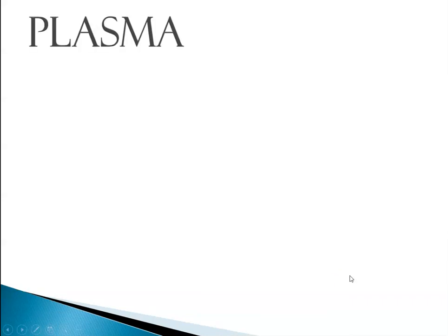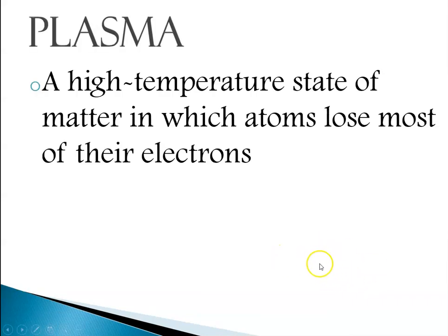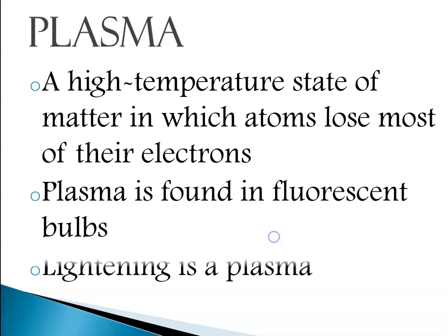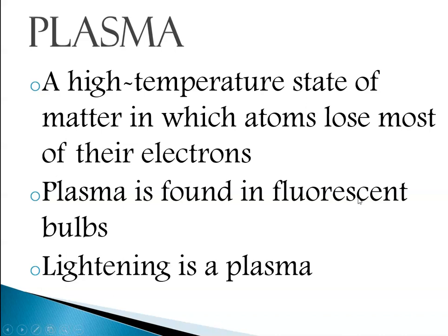Then we have plasma. Plasma is a high temperature or high energy state of matter in which the atoms have mostly lost their electrons. Plasma is found in fluorescent light bulbs, and lightning is also a plasma — a very high energy state of matter. It's usually fleeting; in the case of the plasma in a fluorescent bulb, it will only happen as long as there's electricity going to the bulb.